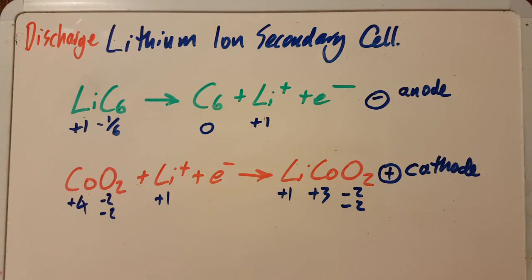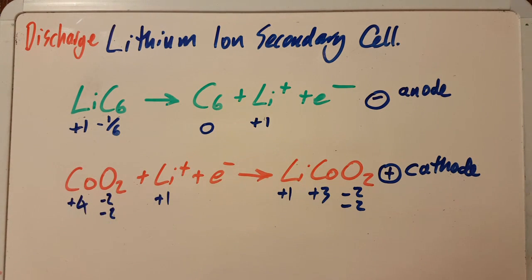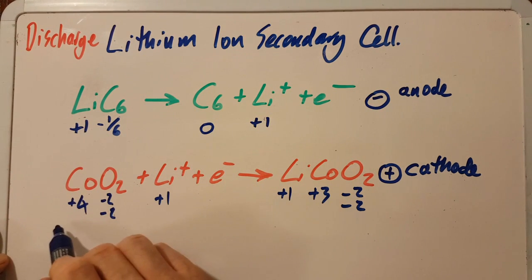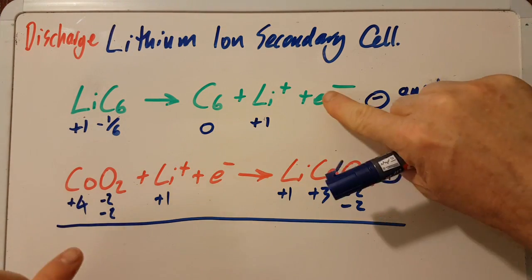The lithium does not participate in the redox reaction - the oxidation state neither increases nor decreases. It's actually the cobalt and the graphite that does. Now if you wanted to add these up to get the equation for the cell, fascinatingly the lithium also cancels in the lithium-ion battery. How delightful is that?